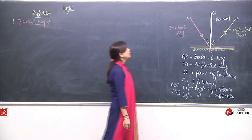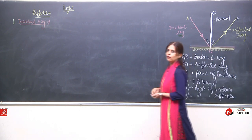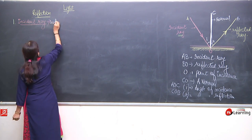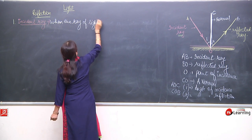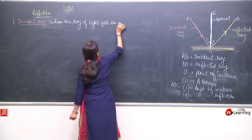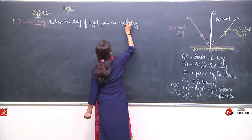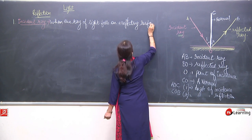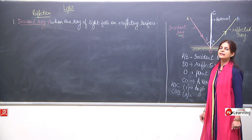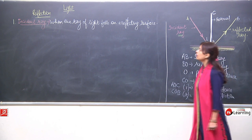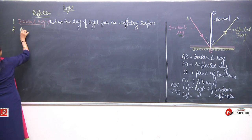How can we define incident ray? When the ray of light falls on a reflecting surface, then it is known as the incident ray. When the same ray is sent back, then it is known as the reflected ray.